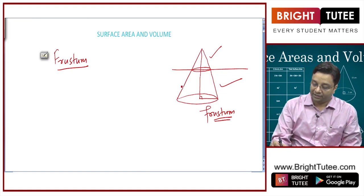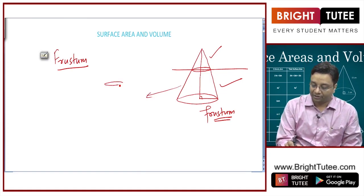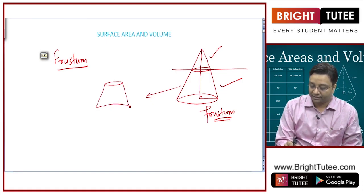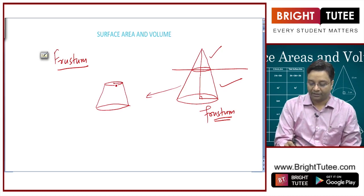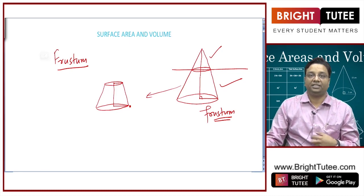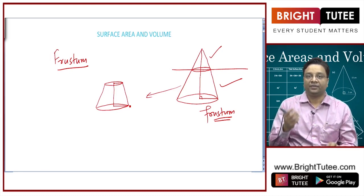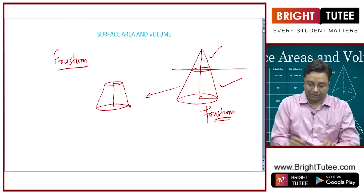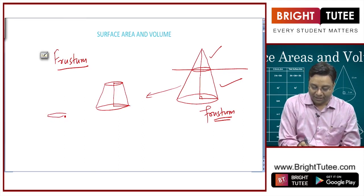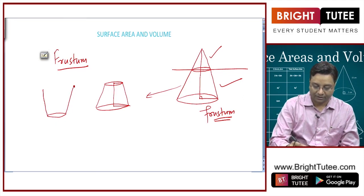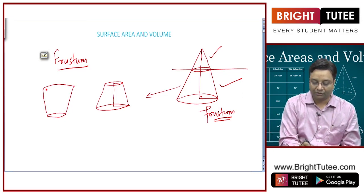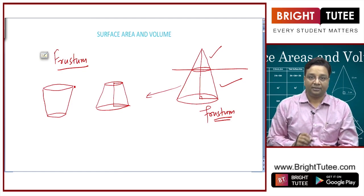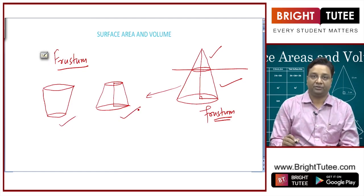If I take this apart and show you a separate picture, the frustum would look like this. There are a lot of things of this shape that you see in your daily life, like a tumbler or a water bucket. If you flip it upside down, it will be easier for you to visualize. This is a frustum.